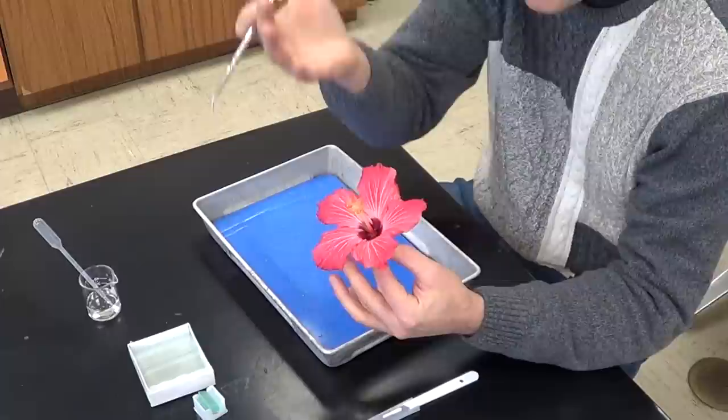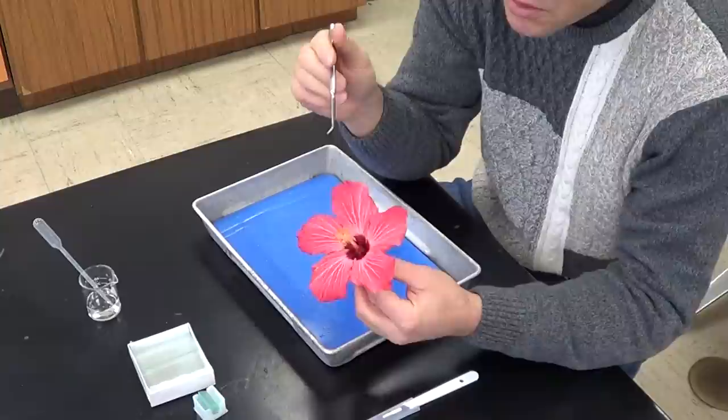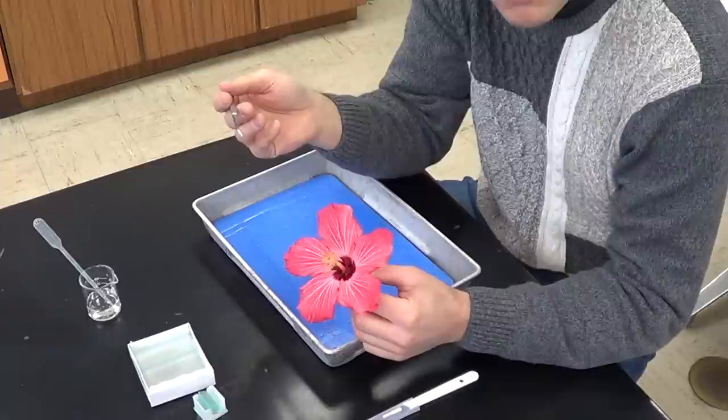That filament helps hold the anther up high. The anther actually makes the pollen, which contains two sperm. You want to hold that up high so that the wind can blow it or an insect has easy access to it.